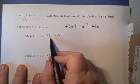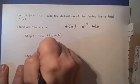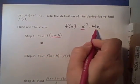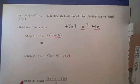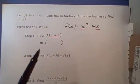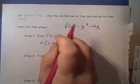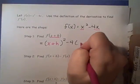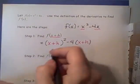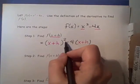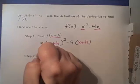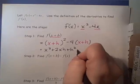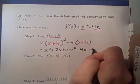Step one is to find f of x plus h. We plug in x plus h wherever we see an x in our original formula, so it looks like x plus h, squared, minus 4 times x plus h. Distributing — make sure to FOIL the first term — we get x squared plus 2xh plus h squared, then distribute the minus 4 to get minus 4x minus 4h.